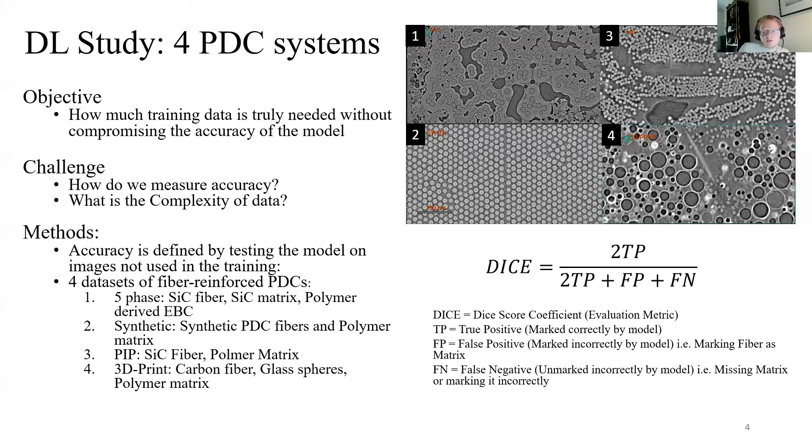To measure the accuracy of a model, we used something called the Sorensen-Dice coefficient. It would serve as our evaluation metric of how good a model truly was. We took a selection of four different fiber-reinforced PDCs to be able to compare and contrast the complexity of their microstructural characteristics and architectures.